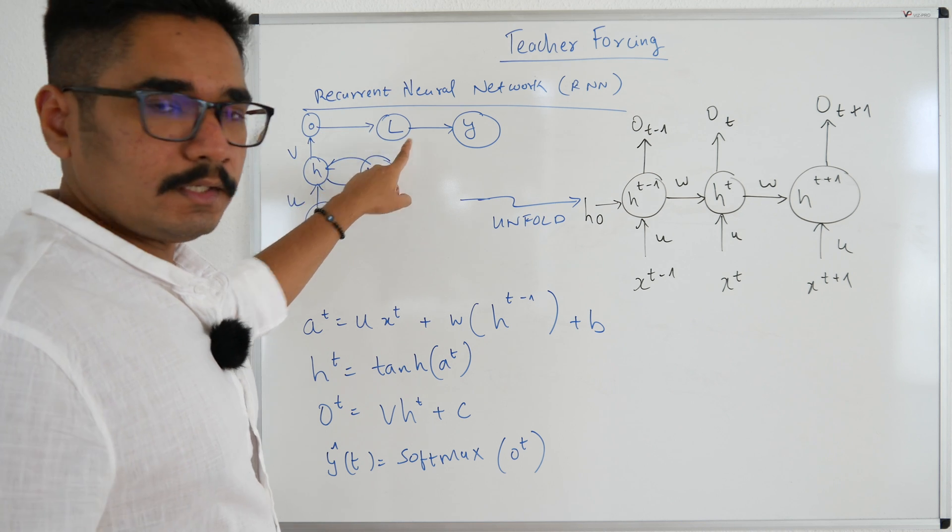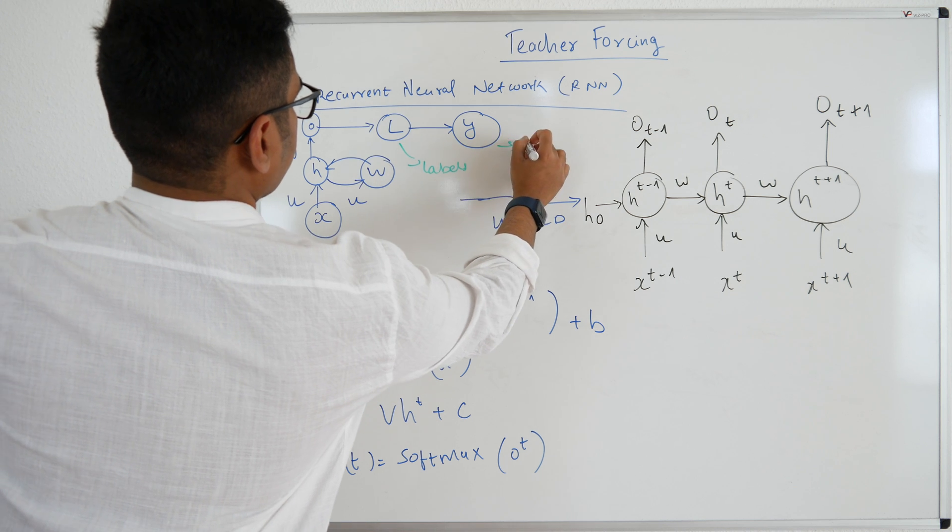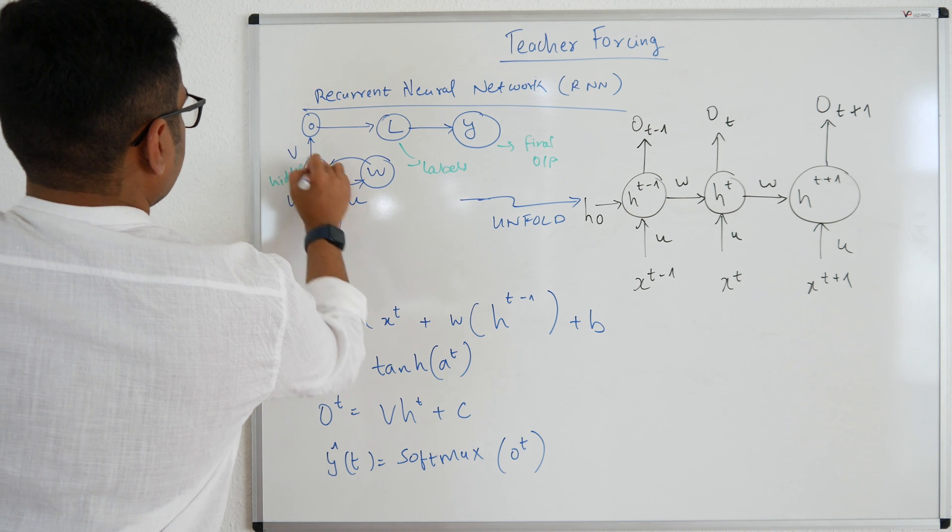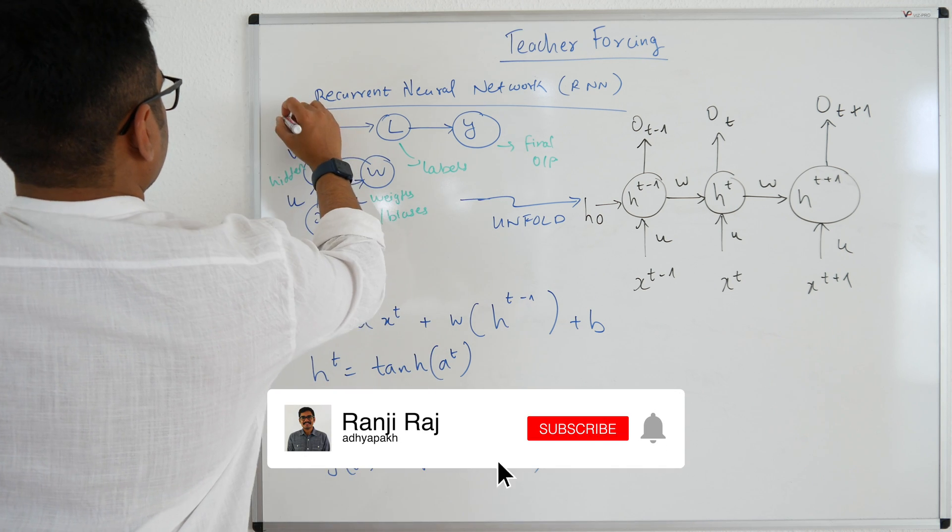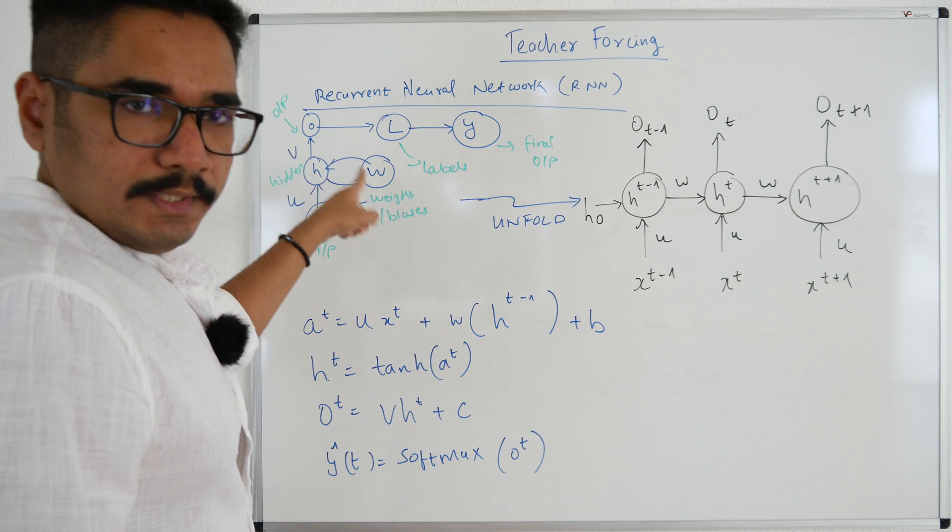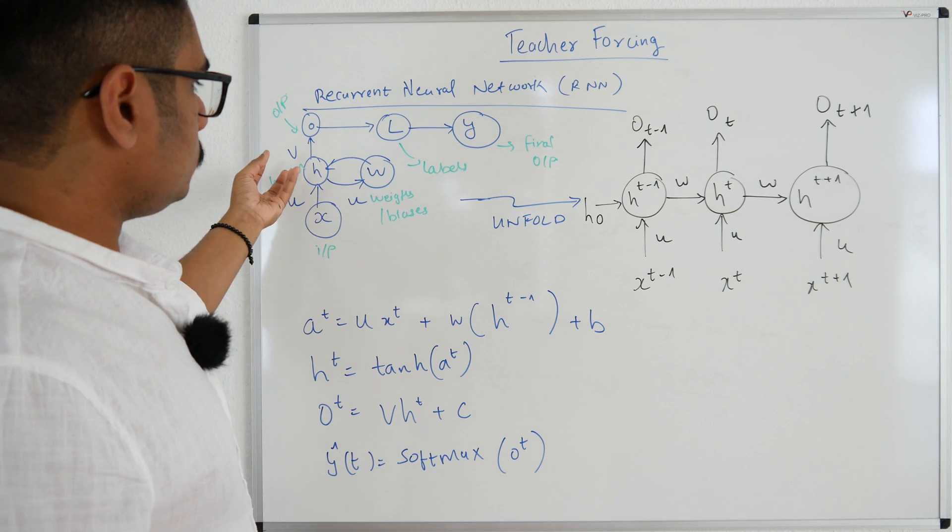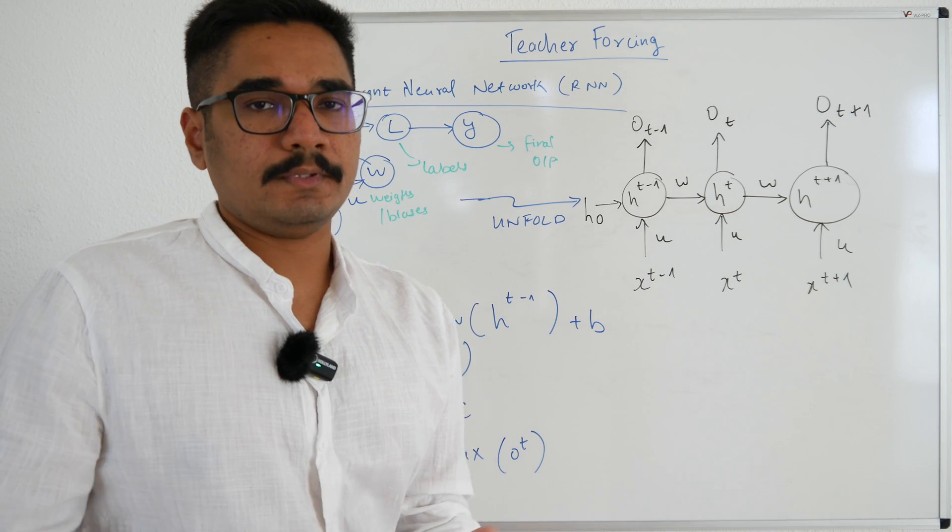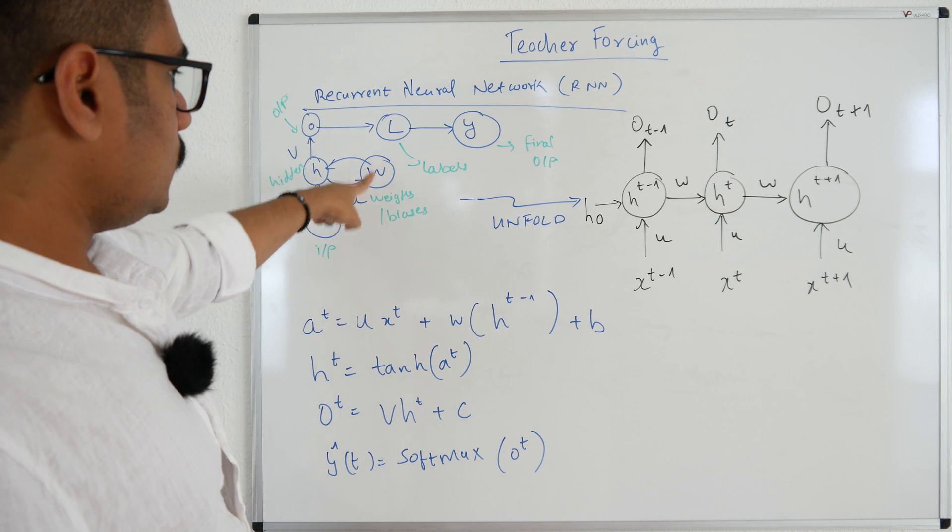Then from hidden to output you have V which is a weight associated in this connection. Then from O to L. Now L is a set of labels and Y is the final output. This is the input, hidden. These are weights or you can call as biases, and this is the output. And you can see there is a looping here. That looping is characterized for recurrent neural networks. You can see there can be n number of hidden units. That is again a hyper parameter which depends upon your use case or how many times you have to train your model. That's why the looping exists.